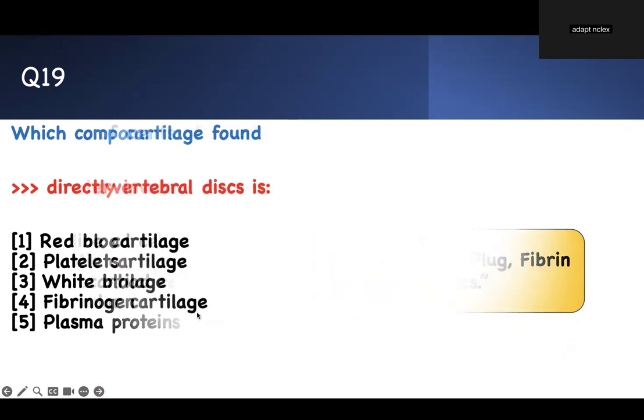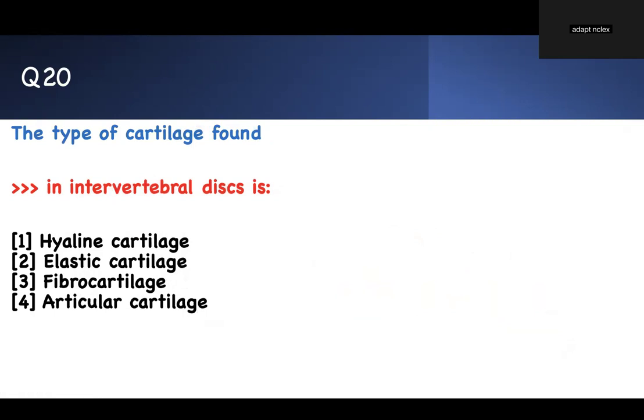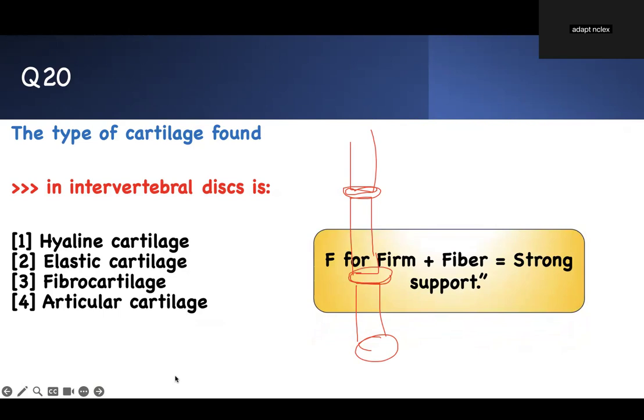One last question. What is your score? I know you get 20 out of 20. The type of cartilage found in intervertebral discs. If you don't know what is intervertebral discs, this is what is in your spine. If you look at your back, you have the bones, the vertebrae, and these have to be stabilized. And in between them, there's a disc. These discs have to be very, very strong. Therefore, what do you think? How do you answer this question? There's a buzzword for that keyword. F for firm and fibrin. Strong support. There's no hyaline. We saw hyaline is the airline. It makes the bone smooth. Elastic makes it stretch. Therefore, it has to be fibrocartilage.